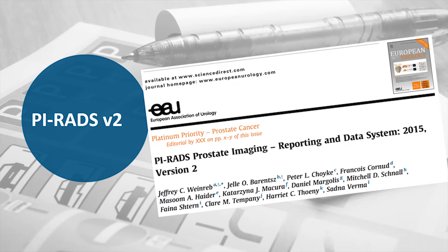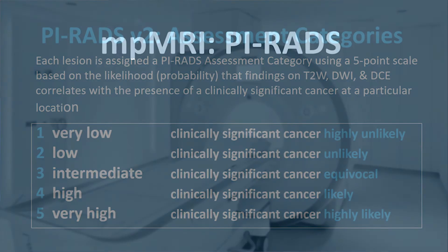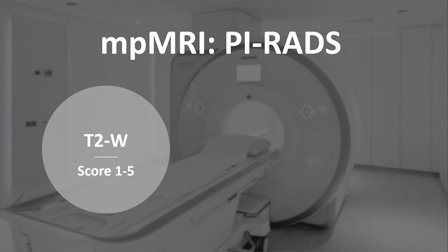What is PI-RADS? PI-RADS consists of the assessment of the risk that there is a clinically significant cancer. 1 means very low and 5 very high — it's a 1 to 5 point Likert scale, so 3 is intermediate. With multi-parametric MRI, we score T2 on a 5-point scale for tissue anatomy, we score cell density with diffusion also on a 5-point scale, and for contrast it's either yes or no.